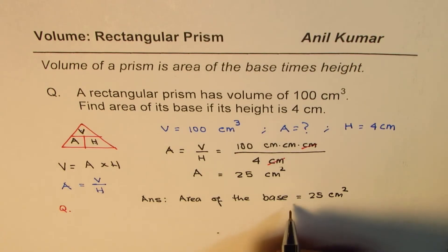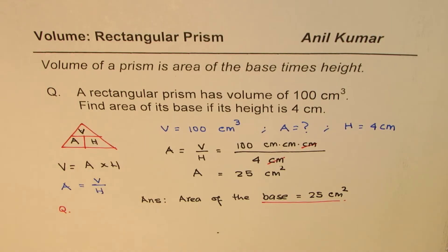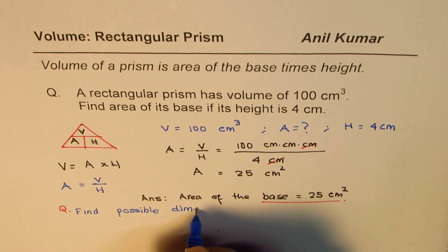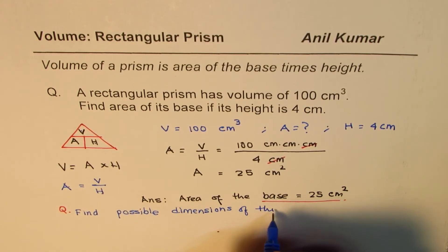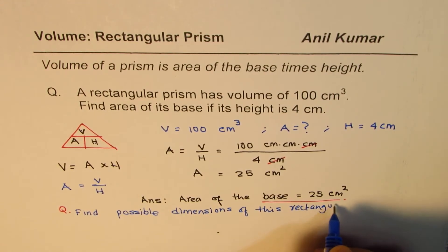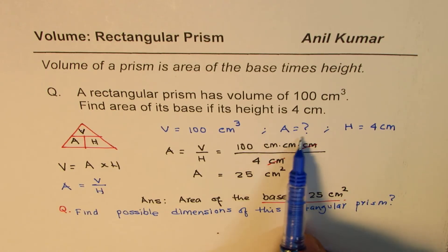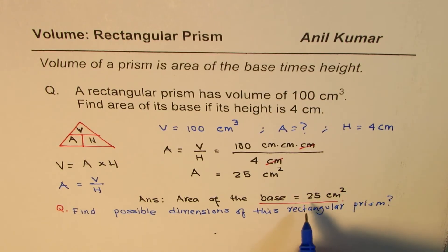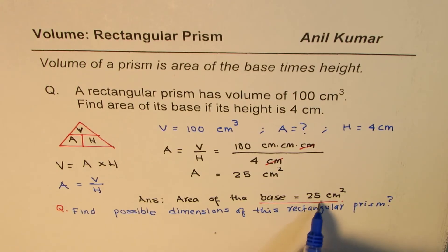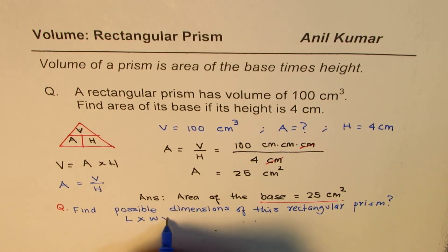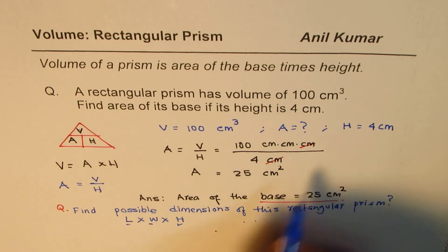Now you know the area of the base is 25 centimeters squared. The question is: find possible dimensions of this rectangular prism. That is a trick question — very difficult. In this rectangular prism we know the height, but we don't know the base length and width. Base area is 25, so what two numbers should you multiply to get 25? That will give you the possible dimensions — we need to find length times width times height. Height is 4 centimeters.